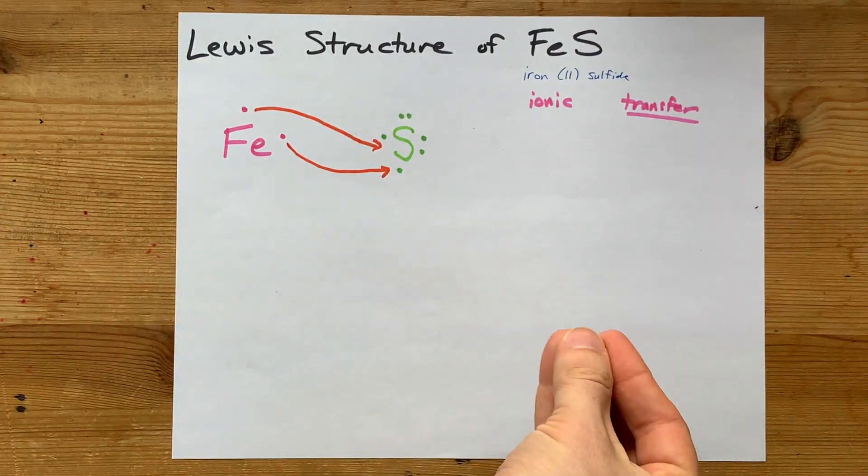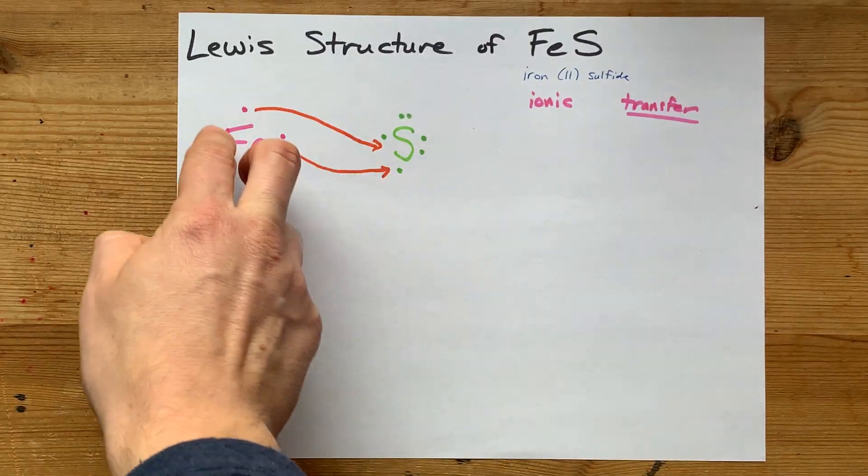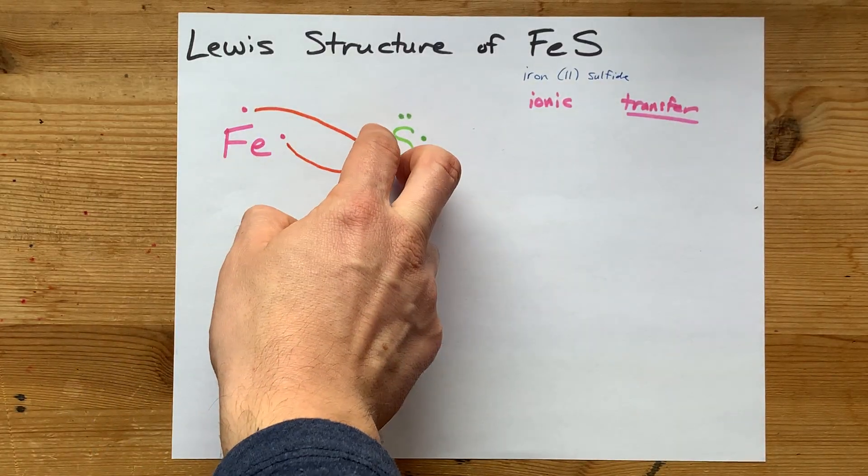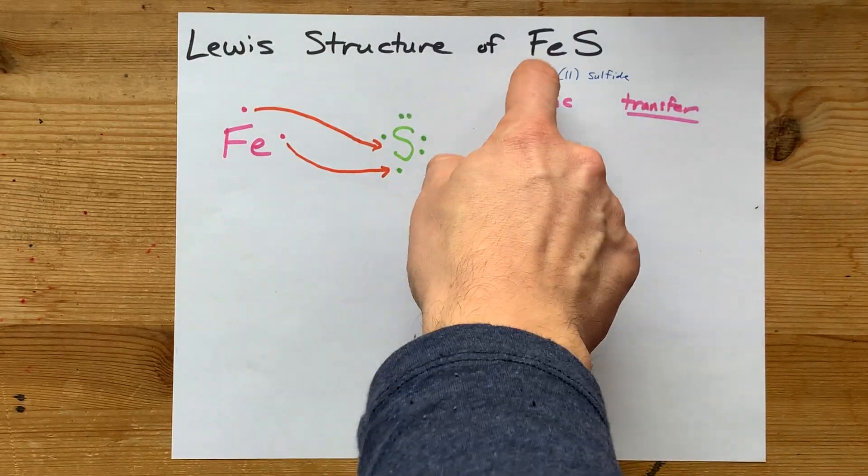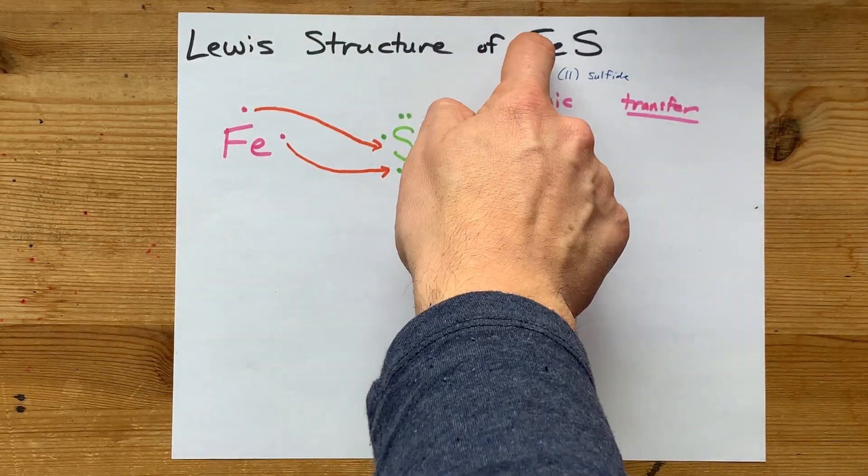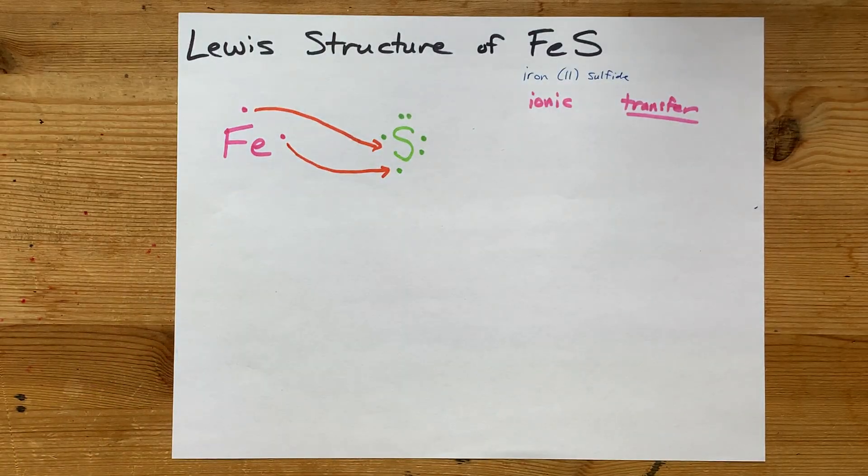Now, these structures can get more complicated when you don't have a matching number being given away as being accepted by the other atom. But FeS, you only need one of each atom to create that structure.